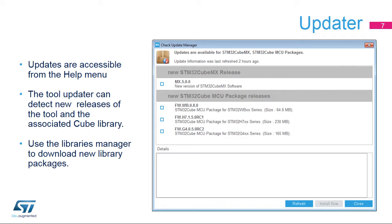If the internet connection is configured correctly, the tool can update itself as well as the code libraries used for generating the project workspaces. Use the Install New Libraries option, ALT plus U, to download additional STM32Cube libraries or retrieve older versions for interoperability reasons. However, note that the STM32CubeMX tool is not tested with all historical library releases.